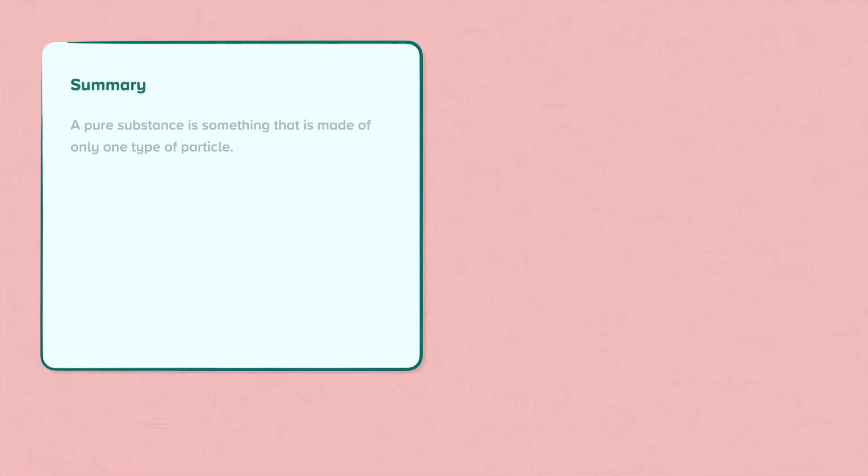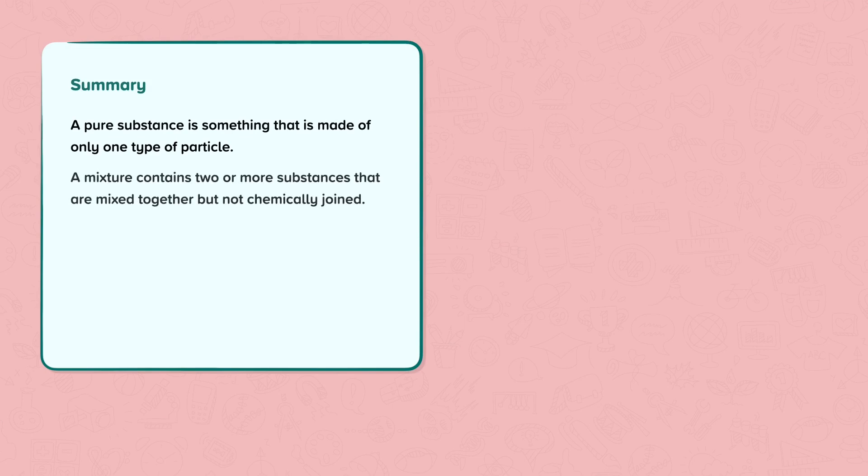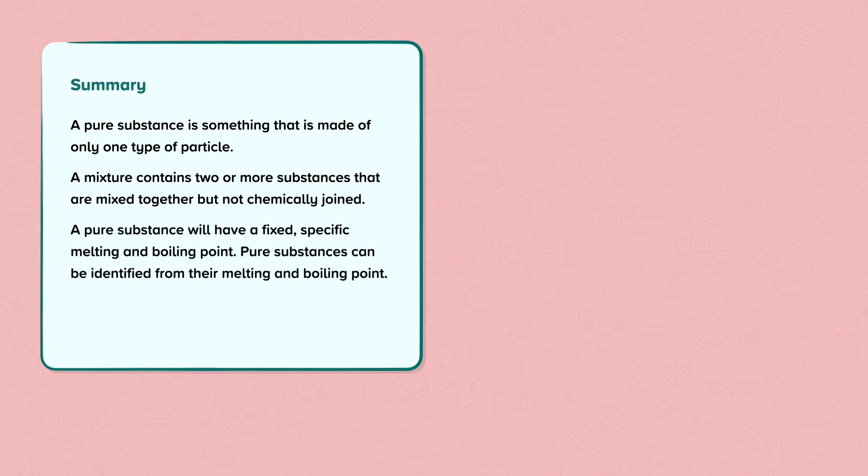In summary, a pure substance is something that is made of only one type of particle. A mixture contains two or more substances that are mixed together but not chemically joined. A pure substance will have a fixed specific melting and boiling point. Pure substances can be identified from their melting and boiling point. An impure substance will melt and boil over a range of temperatures.